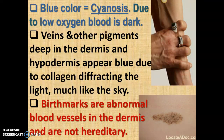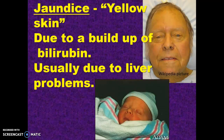Birthmarks are abnormal blood vessels in the superficial part of the dermis. They are not hereditary, but they are clustered, and because they're clustered and higher up, you see a lot more red there. Jaundice is usually due to liver problems. Your liver takes the old red blood cells that your body uses, constantly recycling them.